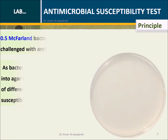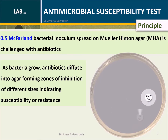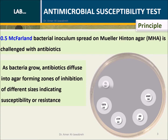Principle: A 0.5 McFarland bacteria inoculum is spread on Mueller-Hinton Agar and challenged with antibiotics. As bacteria grow, antibiotics diffuse into the agar, forming zones of inhibition of different sizes, indicating susceptibility or resistance.